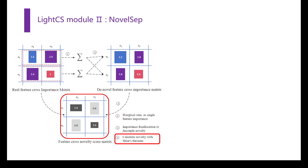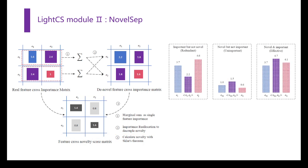In the end, LightCS considers the results of both modules concurrently, and feature crosses with both high importance and novelty are selected.